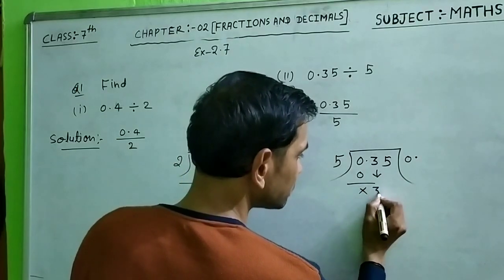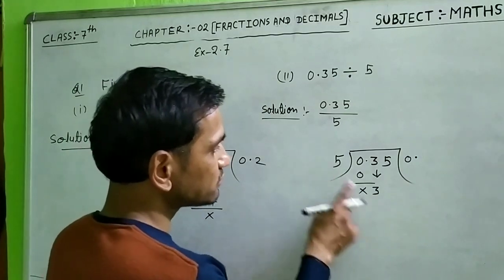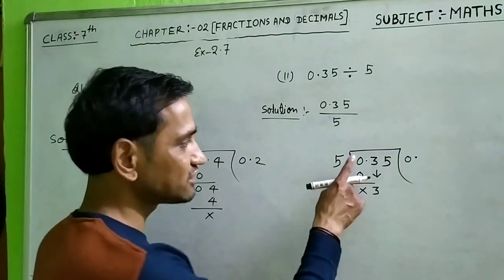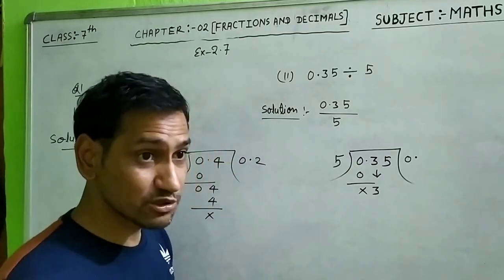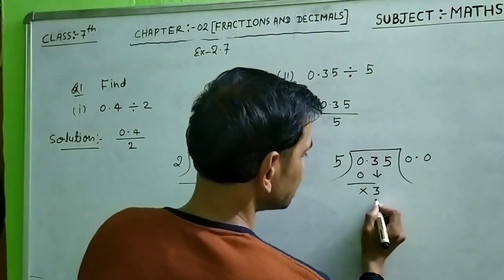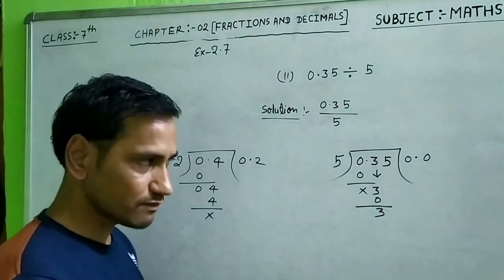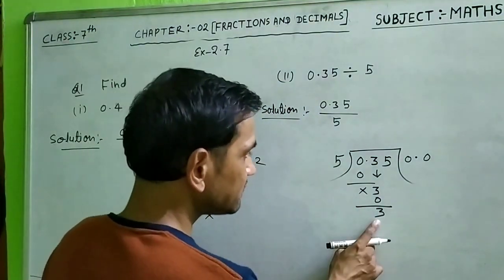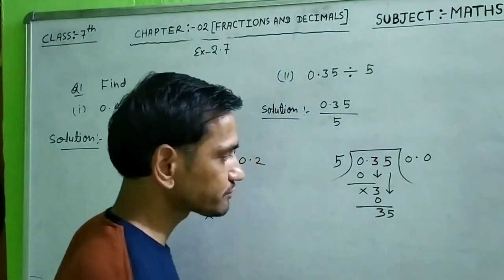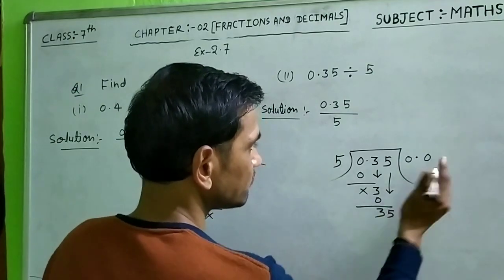Bring down the 3 as remainder. Student, 5 doesn't go into 3, so you start with 0. The remainder is 3. Still doesn't divide, so bring down the 5. Now 5 goes into 35...